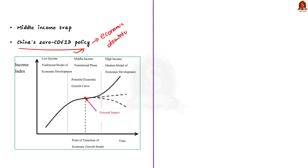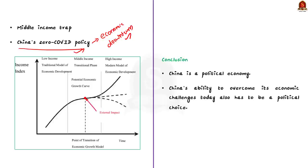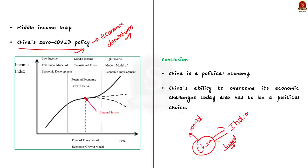These are the challenges faced by China since 2012, and it is because of these challenges that China is currently experiencing an economic slowdown. Even though China is our adversary, we cannot celebrate their economic slowdown because both the Indian and Chinese economies are highly integrated. Any slowdown in the Chinese economy will in turn affect our economy too, so steps must be taken to insulate countries from the Chinese economic downturn.